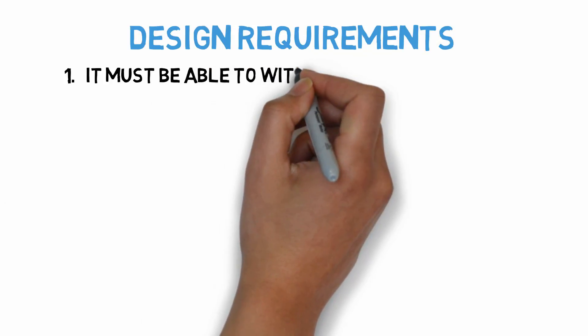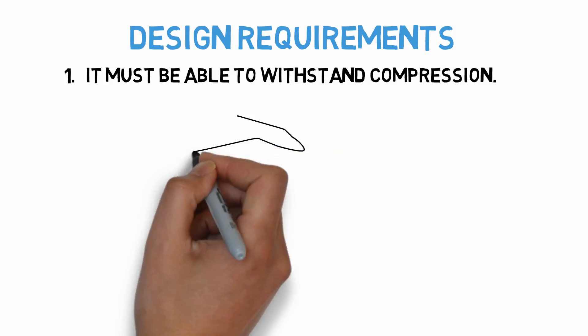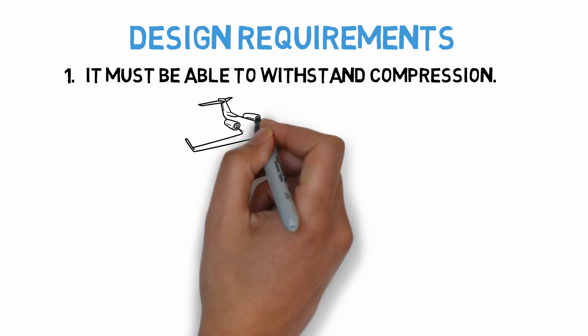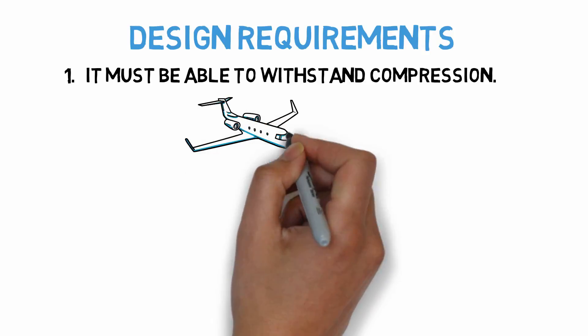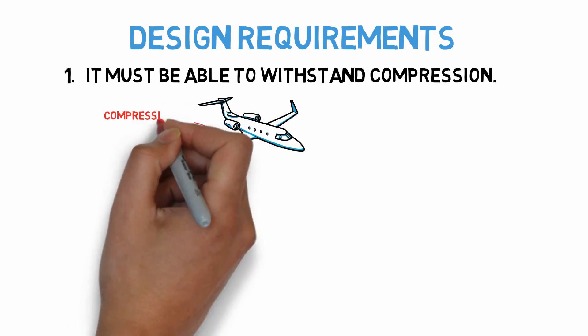One, it must be able to withstand compression. You'll learn about this in more detail next week, but because of lift forces on a wing, it tends to bend upwards in flight, so the upper skin must be able to take compressive loads.